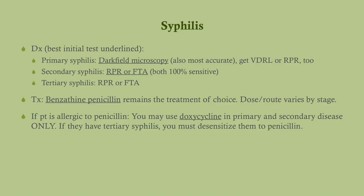The best initial test depends on the stage. For primary syphilis, get a swab and do dark field microscopy — it's the best initial and most accurate test. For secondary and tertiary syphilis, RPR or FTA is more sensitive. In tertiary syphilis, we often get a lumbar puncture and can test the CSF. The treatment is benzathine penicillin — it was the treatment of choice 50 years ago and still is. We don't have much resistance, so we still use it.